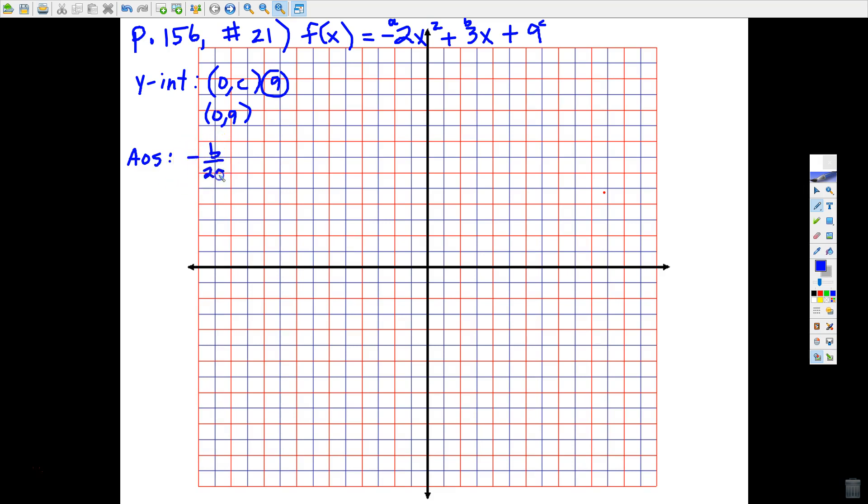I've already labeled these numbers for you. The b coefficient is 3, the a coefficient is negative 2. Remember it's 2 times negative 2, 2 times a. In the parentheses I have negative 3 fourths, but when I apply this opposite of, I get positive 3 fourths. So the equation for the AOS is the line x equals positive 3 fourths.